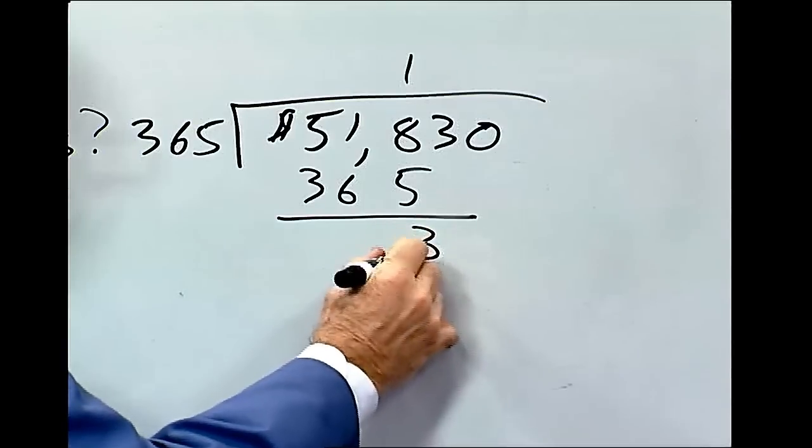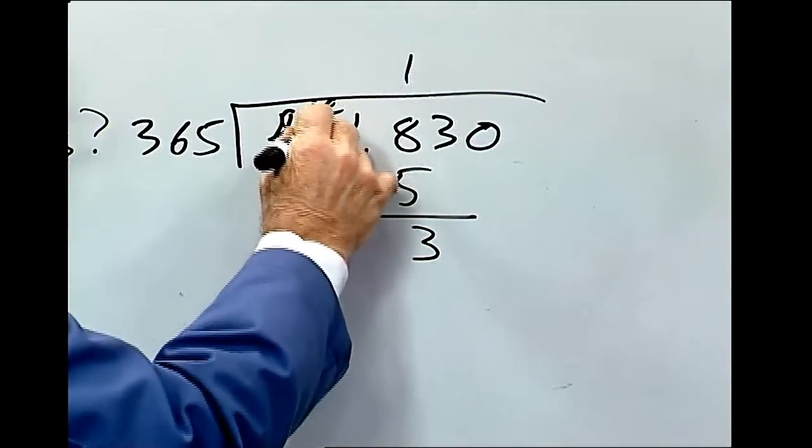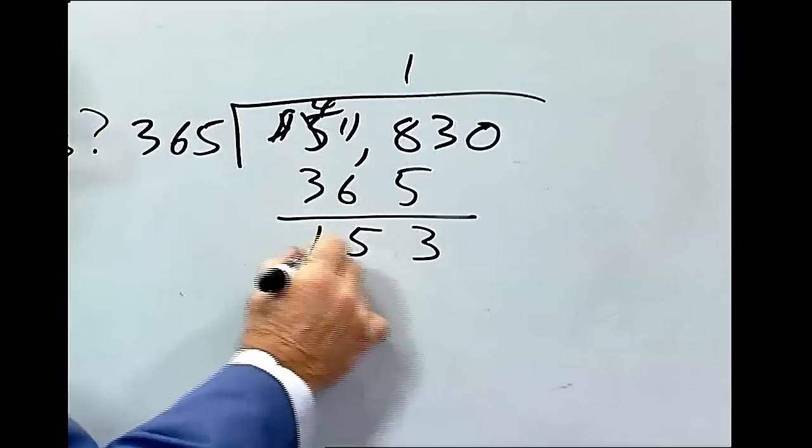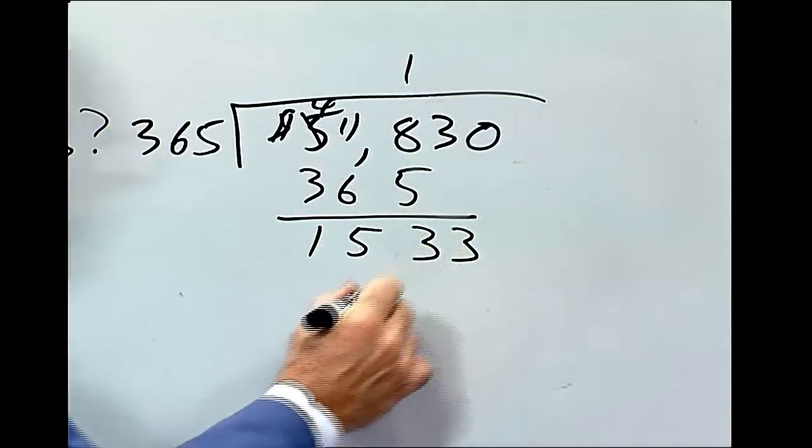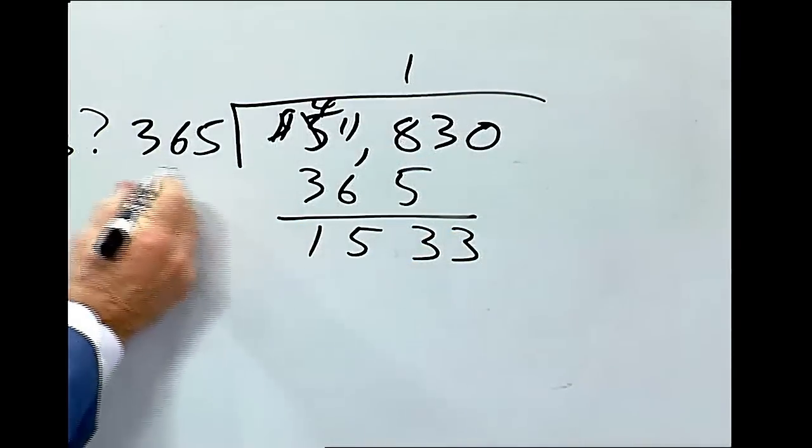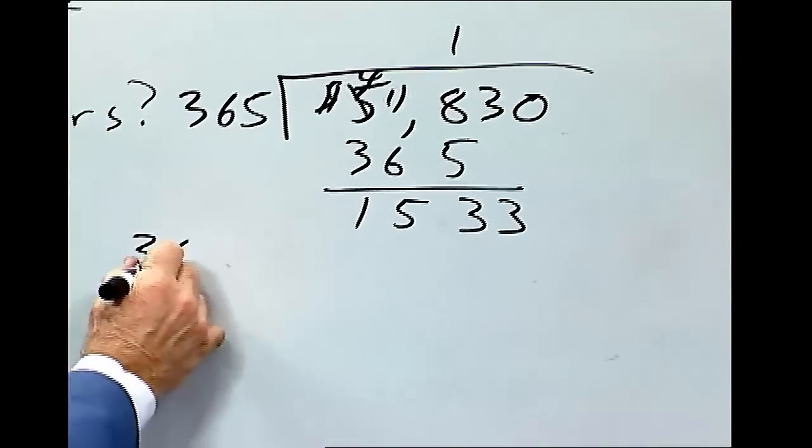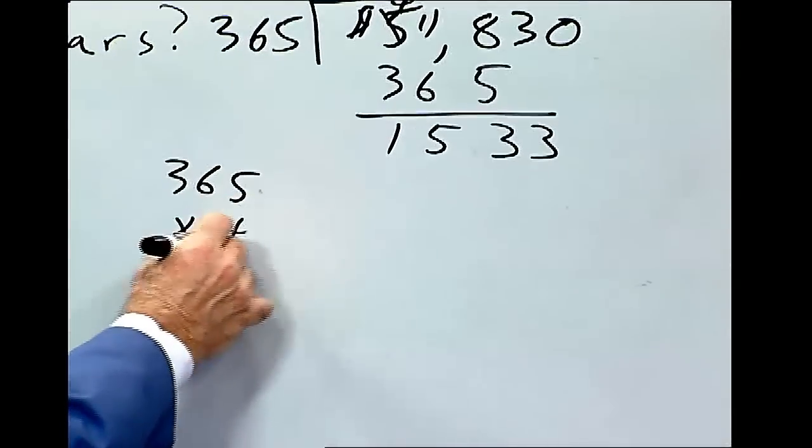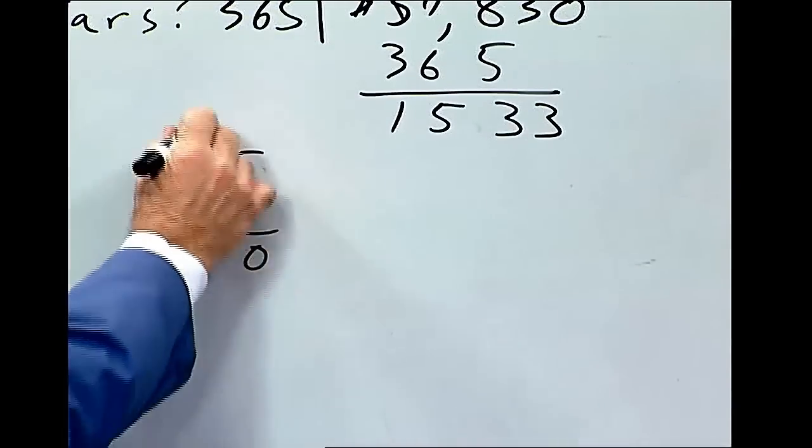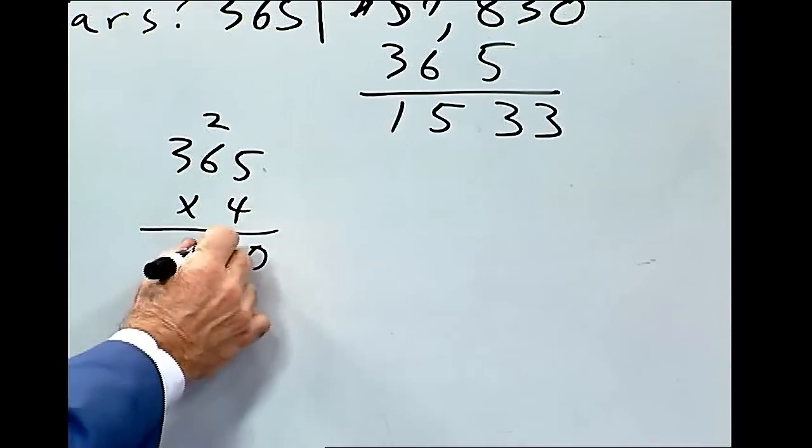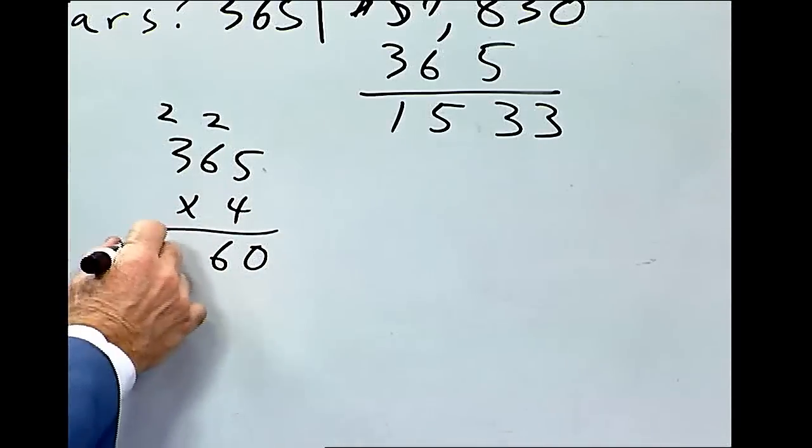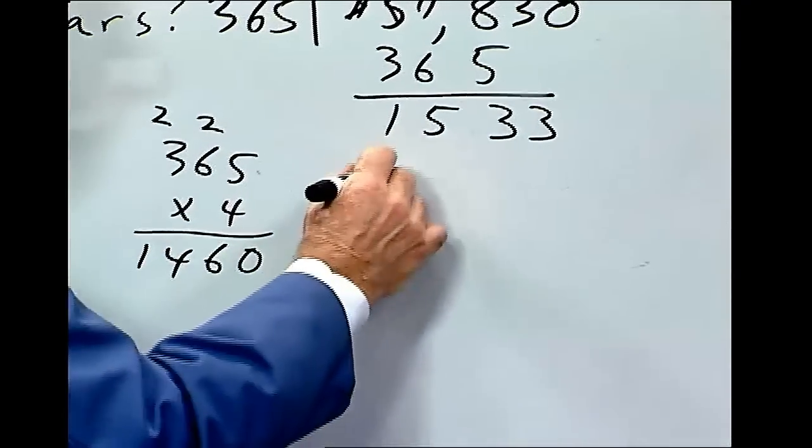That will go 1 times 365. That would be 3, borrow 1, that would be 5, that would be 1, bring down the 3. And that would be 4 times. 365 times 4: 20, 24, 26, 14.